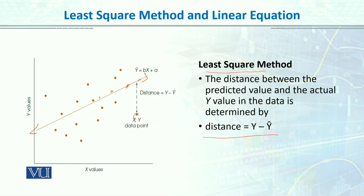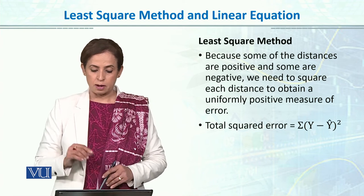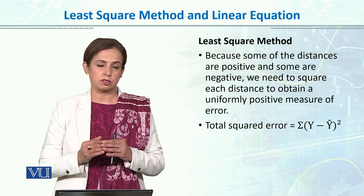This difference or distance between y and predicted y is called the residual. Similarly, when the predicted y is here and the actual y is elsewhere, that again is the distance between actual y and predicted y. In the least square method, the line is drawn to minimize this distance. Because some of the distances are positive and some are negative, we need to handle the signs carefully.